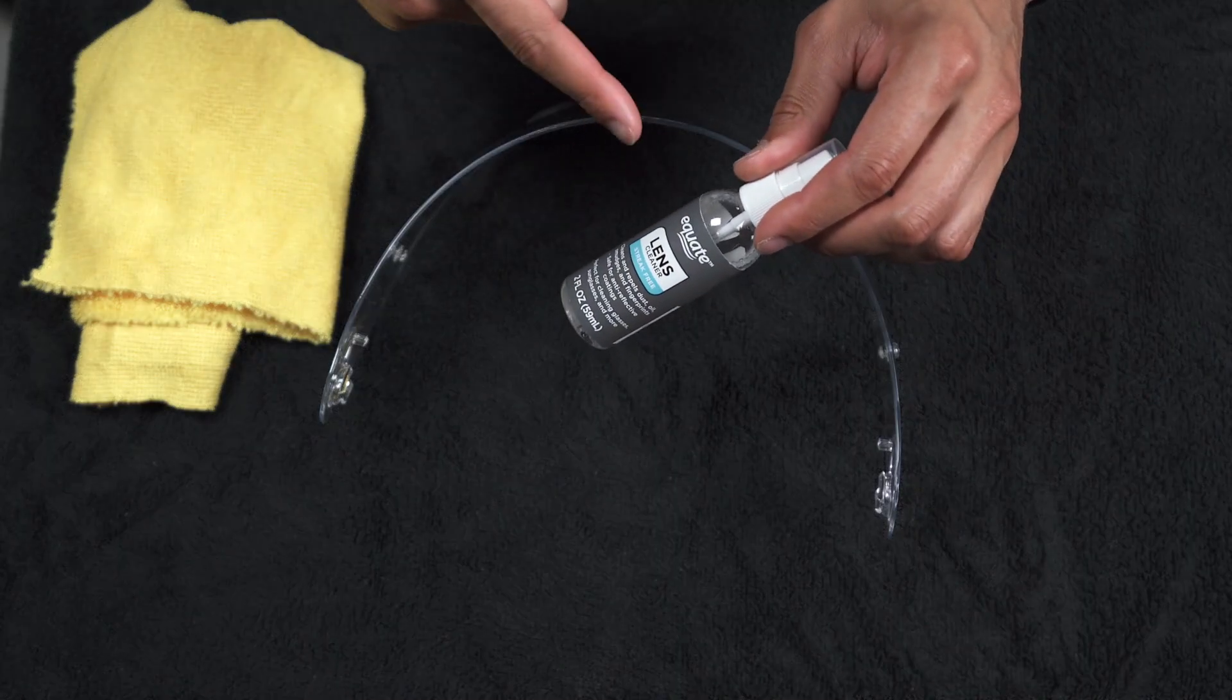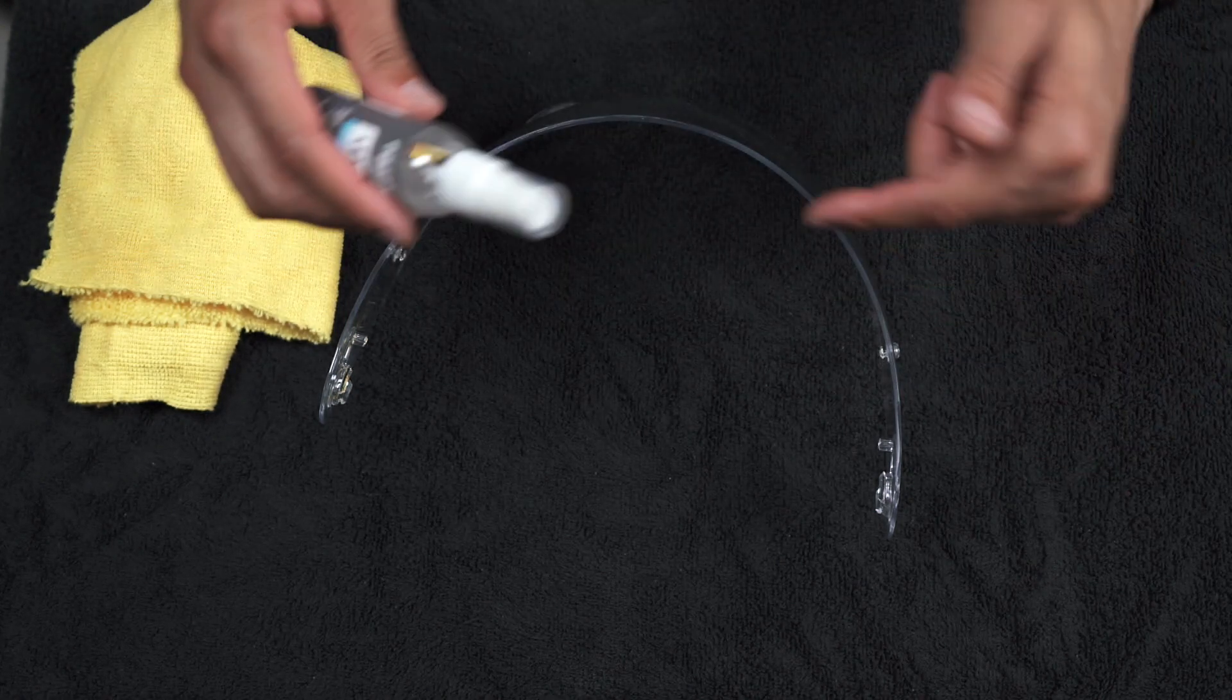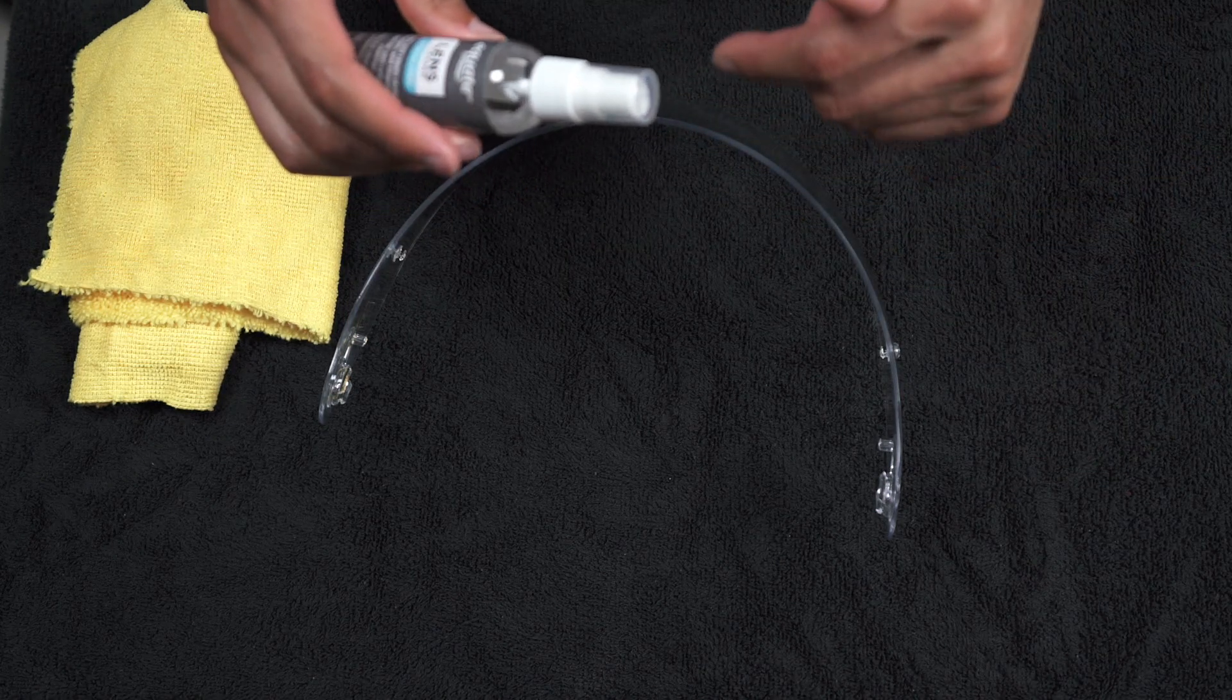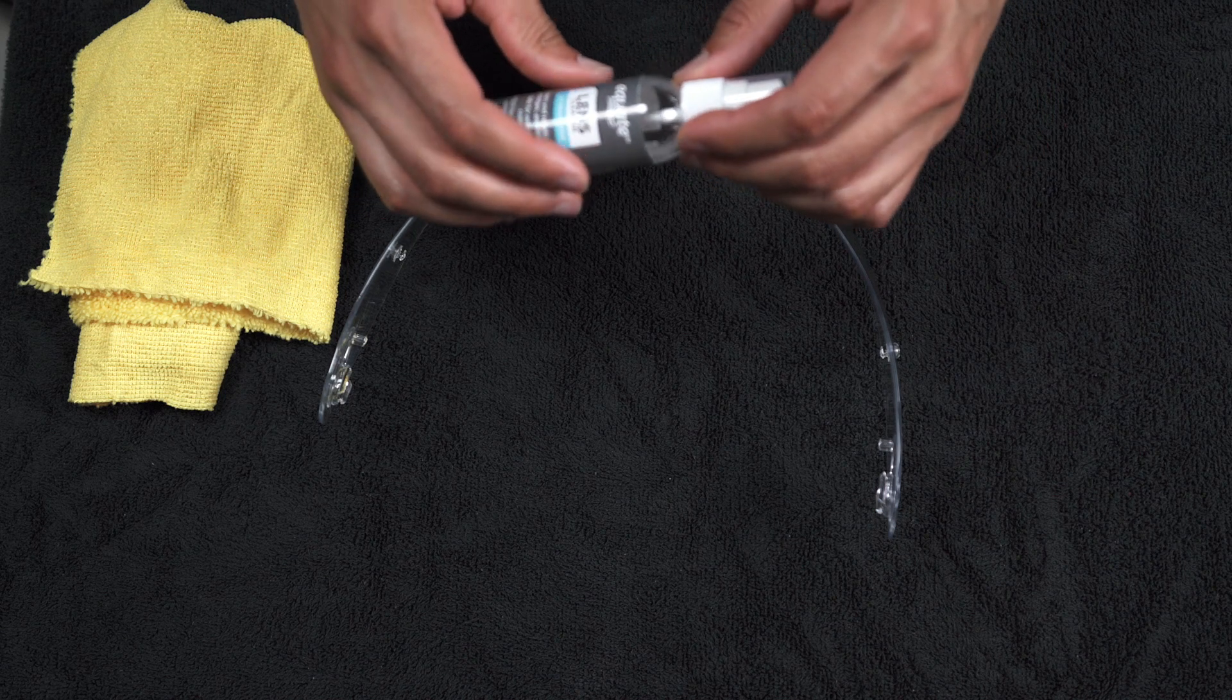You want to make sure you clean your visor with some sort of lens cleaner. You can pick this up anywhere and basically that just gets rid of all the smudges and fingerprints and dust off of the visor before you actually put the anti-fog lens onto it.